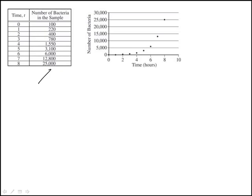We're given data that a scientist observed about bacterial growth in a sample, shown as a scatter plot. We're also given four functions and need to identify which one best models this data. We can do this by selecting specific points and testing to see which function gives us the closest answer.